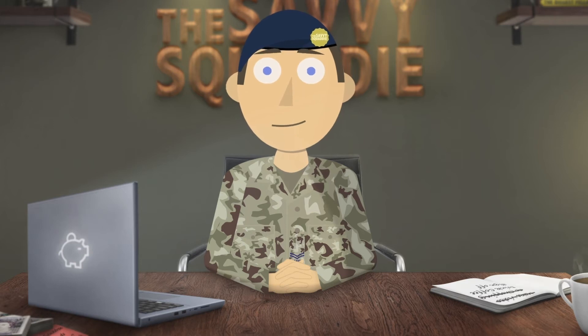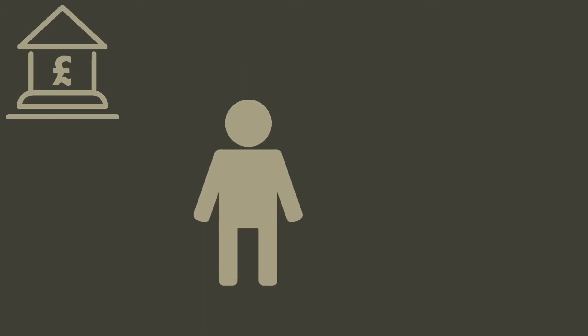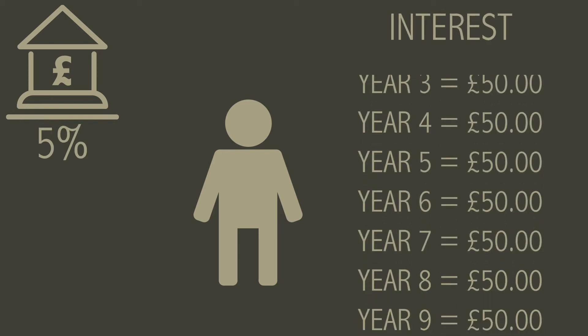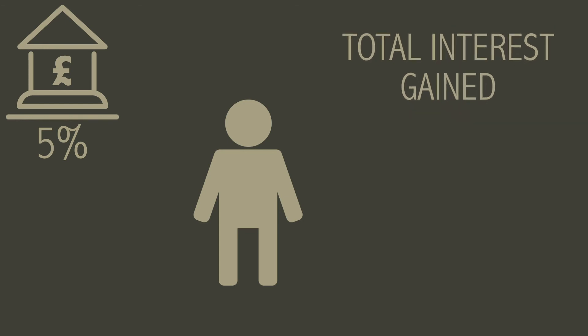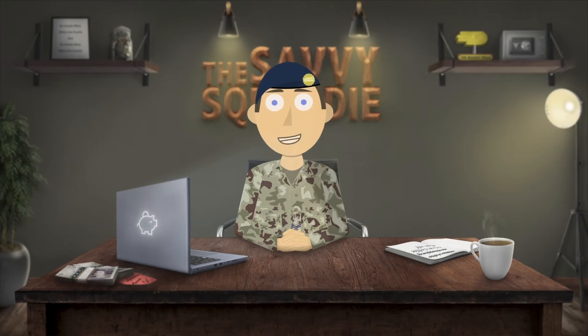Simple interest doesn't work this way. Simple interest is where the amount of interest earned is fixed over time. So if we use the same example as before, with a £1,000 deposit, you would consistently only get £50 in interest every year, and at the end of 30 years your total interest earned would be £1,500 and so your total would be £2,500. Put simply, simple interest works on just the deposited money while compound interest works on both the money you deposit and the interest it gains.